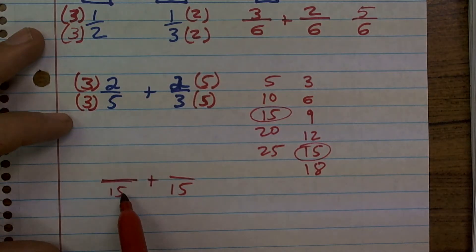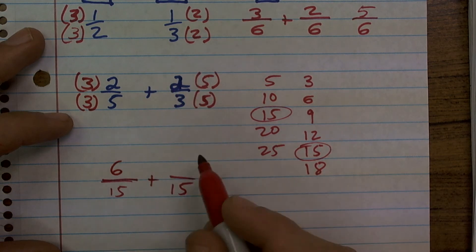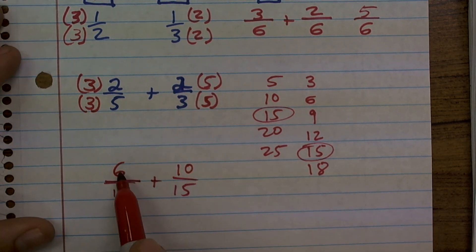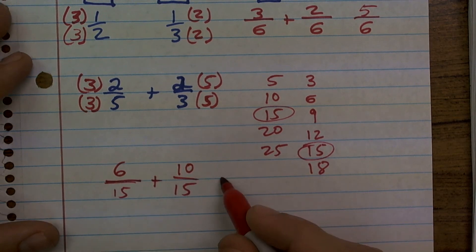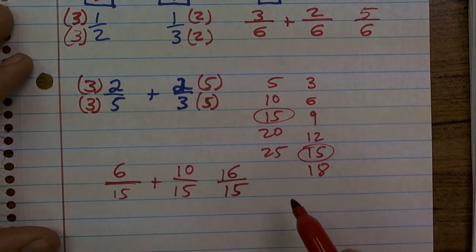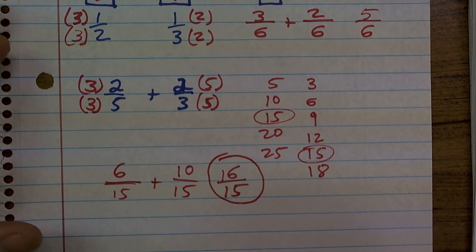So 3 times 5 we know is 15. 3 times 2 is going to be 6. 5 times 2 is going to be 10. Now all I can simply do is add 6 plus 10, which is going to give me 16 over 15. And that is going to be an improper fraction, but that's okay. And I'm just going to leave that as my answer.